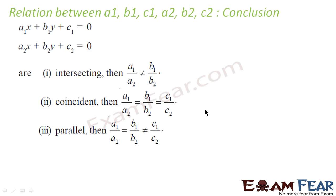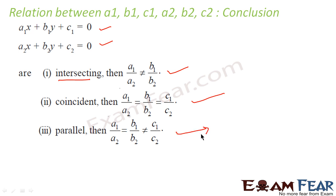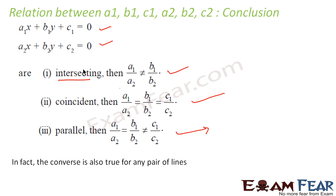With the conclusion once again: if there are two lines a1x + b1y + c1 = 0 and a2x + b2y + c2 = 0 — this is the general form — then they are intersecting if a1/a2 is not equal to b1/b2. They are coincident when a1/a2 = b1/b2 = c1/c2, and they are parallel when a1/a2 = b1/b2 but not equal to c1/c2. The converse is also true.